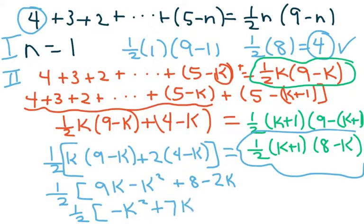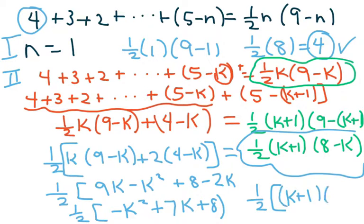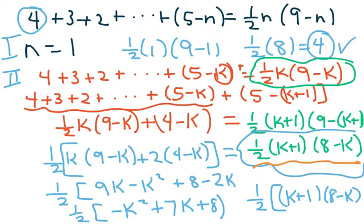Factoring this gives (k plus one) times (8 minus k). A good approach is to write down what the answer is supposed to be and then foil it out to verify — especially helpful when you have negatives that are confusing.